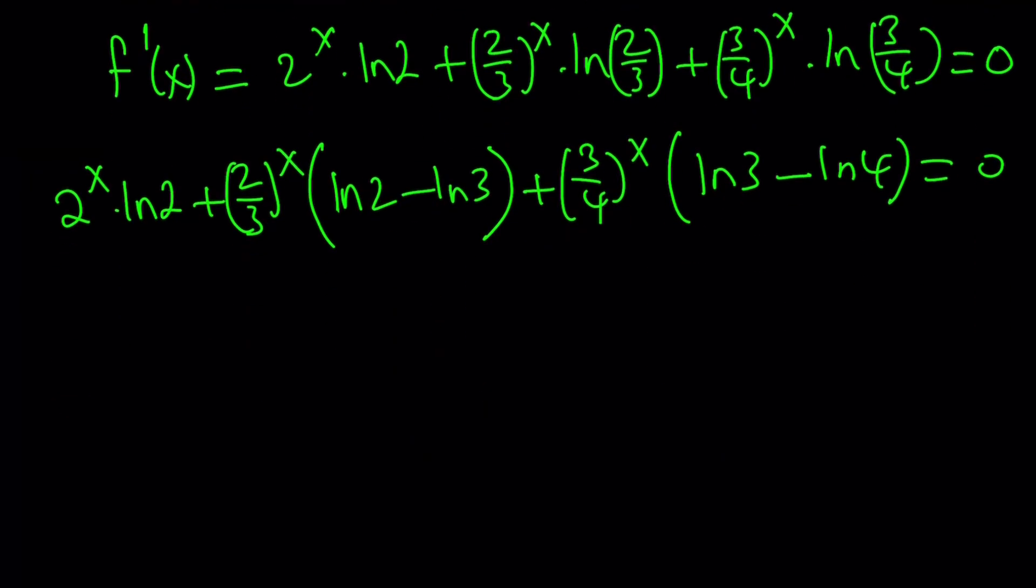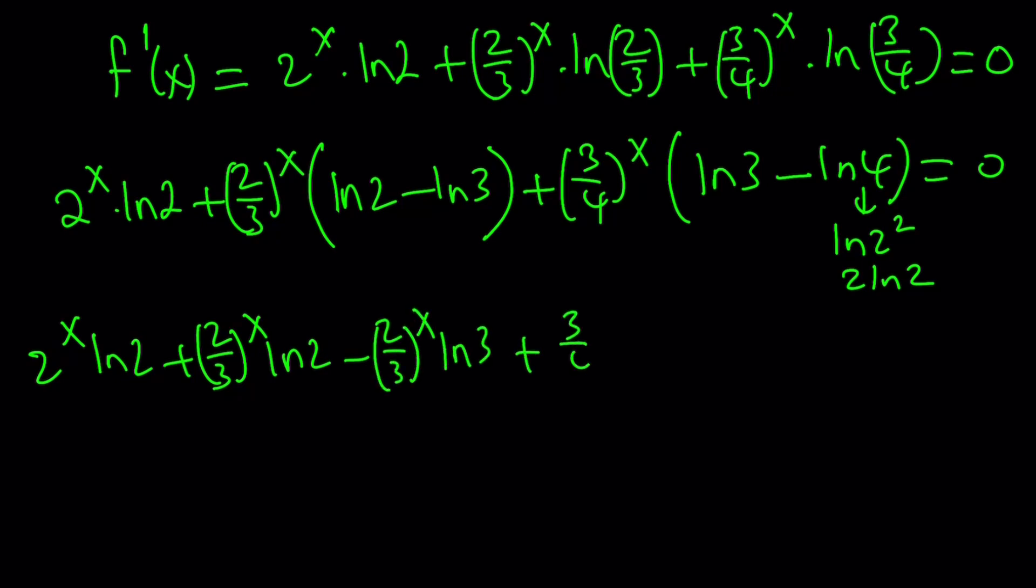So ln(4) is ln(2²), so I can write it as 2ln(2). Now, if you distribute this: 2^x·ln(2) + (2/3)^x·ln(2) - (2/3)^x·ln(3) + (3/4)^x·ln(3) minus, notice that there's a 2 here, 2·(3/4)^x·ln(2). And the whole thing is equal to zero.